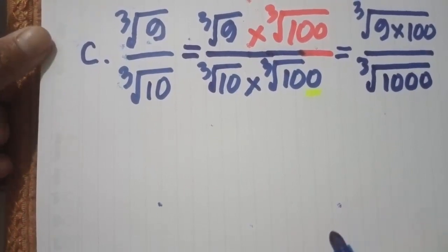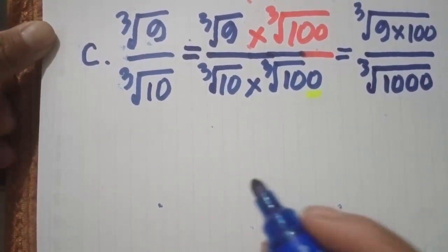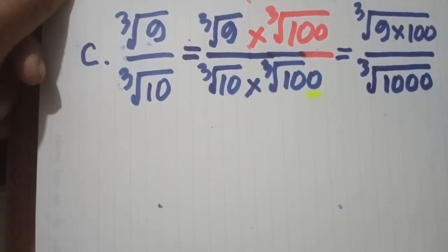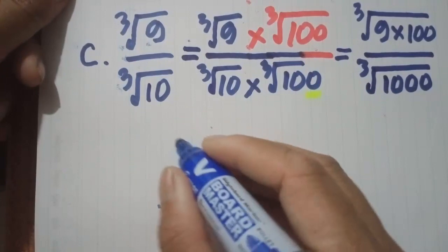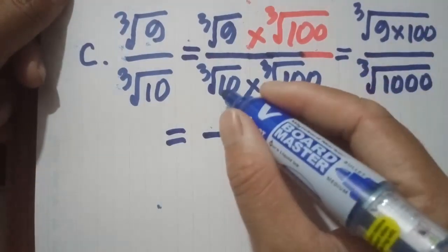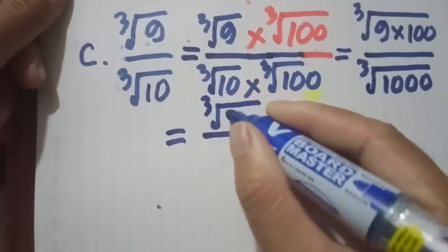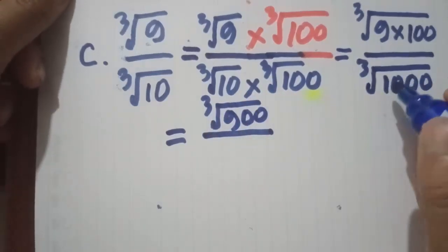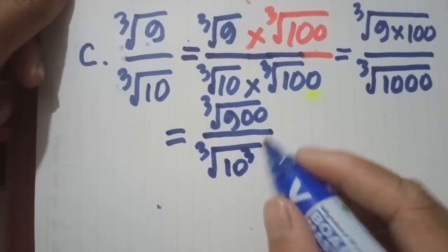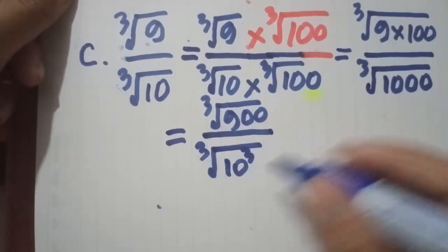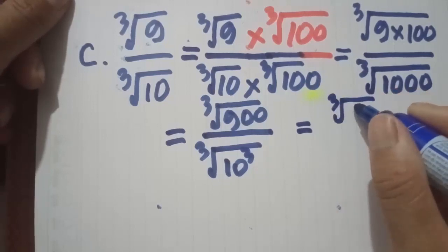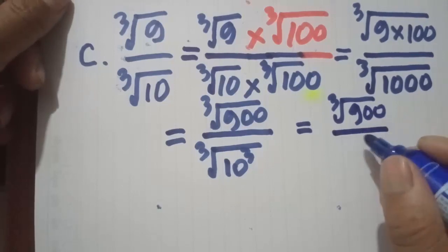Okay, you can see continue. So now we can — okay, equal and like this: 9 and 100 is 900. And below, 10 okay, 10 times 3. So now we can delete, so equal Radical 3, 900 and on 10.